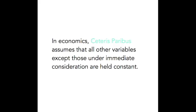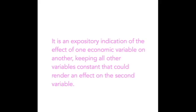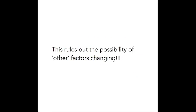In Economics, Ceteris Paribus assumes that all other variables except those under immediate consideration are held constant. It is an expository indication of the effect of one economic variable on another, keeping all other variables constant that could render an effect on the second variable. This rules out the possibility of other factors changing.